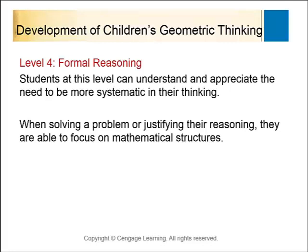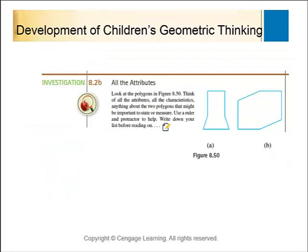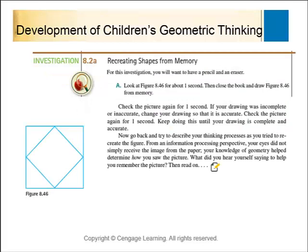Formal reasoning is where we get into things like proofs and the mathematical structure of geometry. If we think about spatial geometry and look at a picture for one second, then go away and try to draw it — did you know it was a square inside a square, or did you note that lines met at the bisection point of each line segment, exactly in the middle? Just what were you looking at, and were you able to recreate that shape?